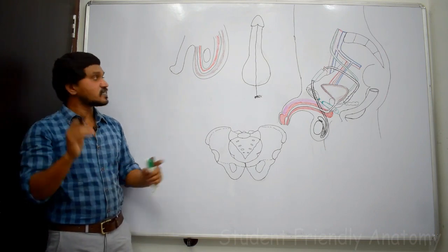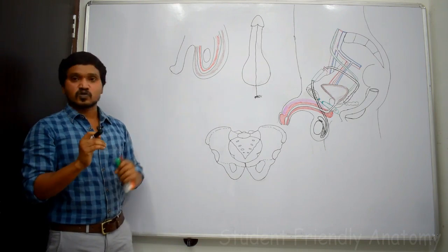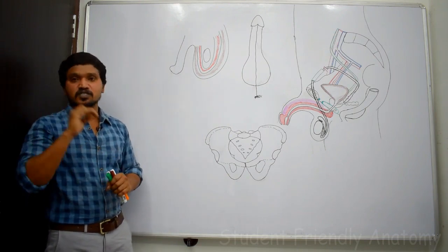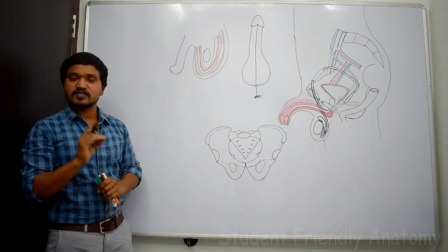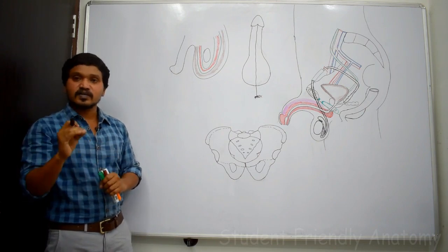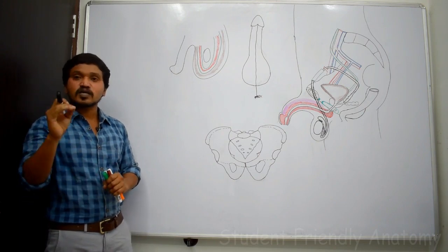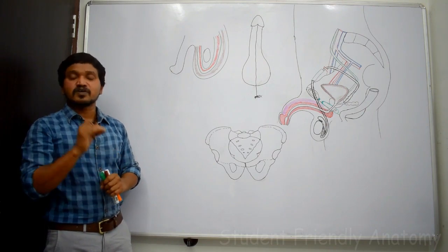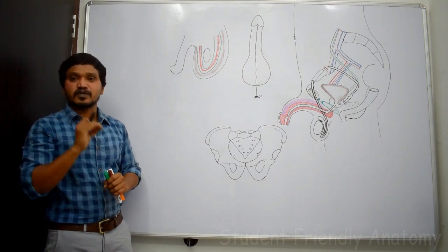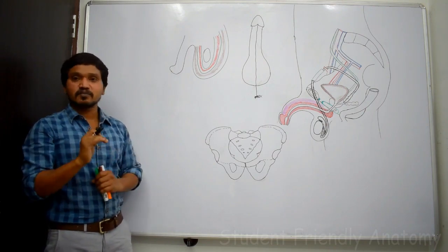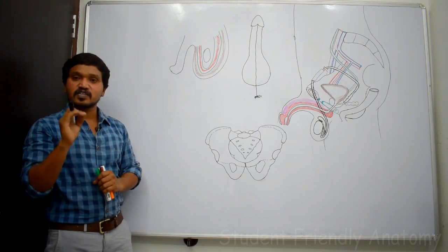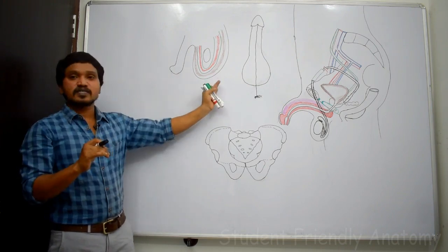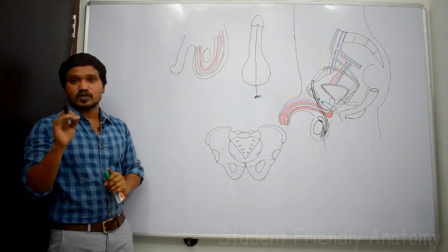Now we will see the blood supply of the scrotal sac. It is supplied by the superficial external pudendal artery, deep external pudendal artery — these are branches from the femoral artery — then the scrotal branch of the internal pudendal artery, and the cremasteric branch of the inferior epigastric artery. The inferior epigastric artery is a branch from the external iliac artery.